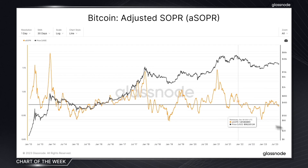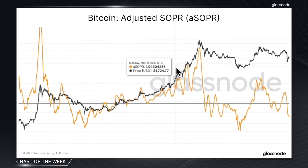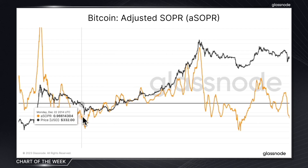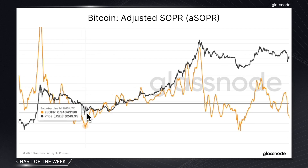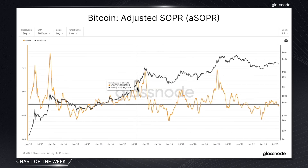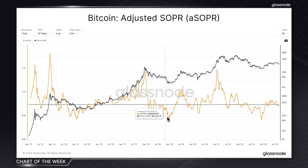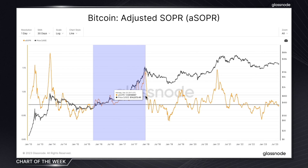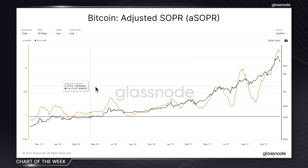When the value of SOPR is above 1, it indicates that the majority of transactions are being made in profit. Conversely, values below 1 indicate more transactions are being made at a loss. Extended periods where the metric remains above 1 suggest that coins are being sold at a profit, hinting at a bullish sentiment. On the flip side, periods below 1 indicate coins are being sold at a loss, signalling bearish sentiment. Notably, SOPR of 1 tends to act as a level of support during uptrends, as you can see here.